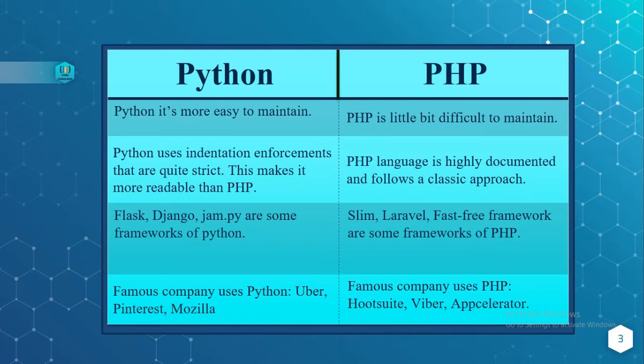Flask, Django, and Jam.py are some of the frameworks used in Python, whereas PHP uses frameworks such as Slim, Laravel, FastPage, and some more.